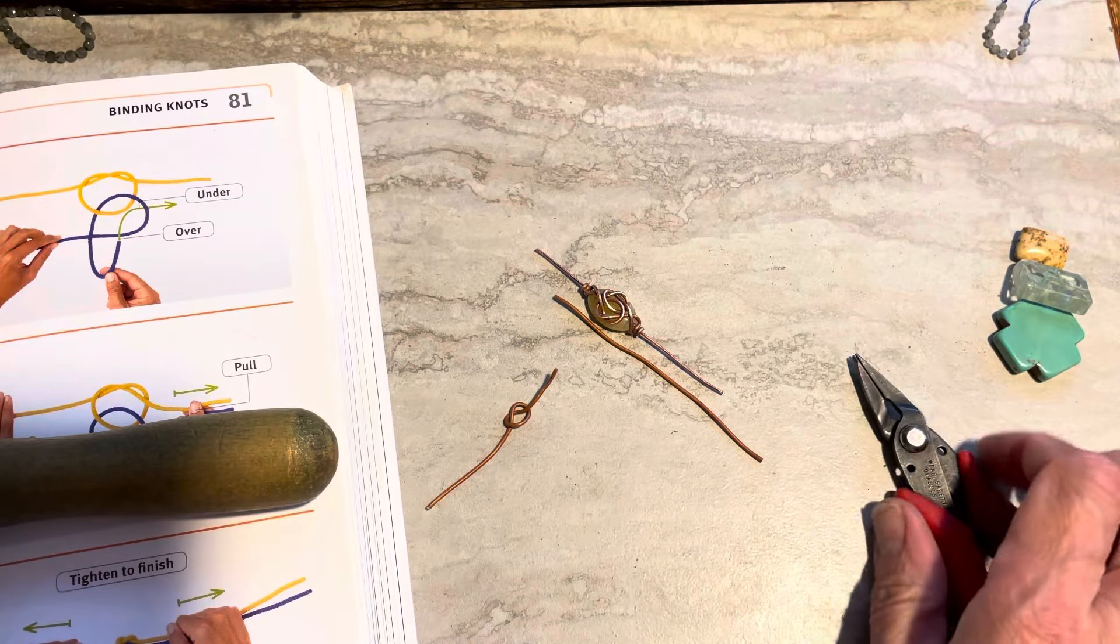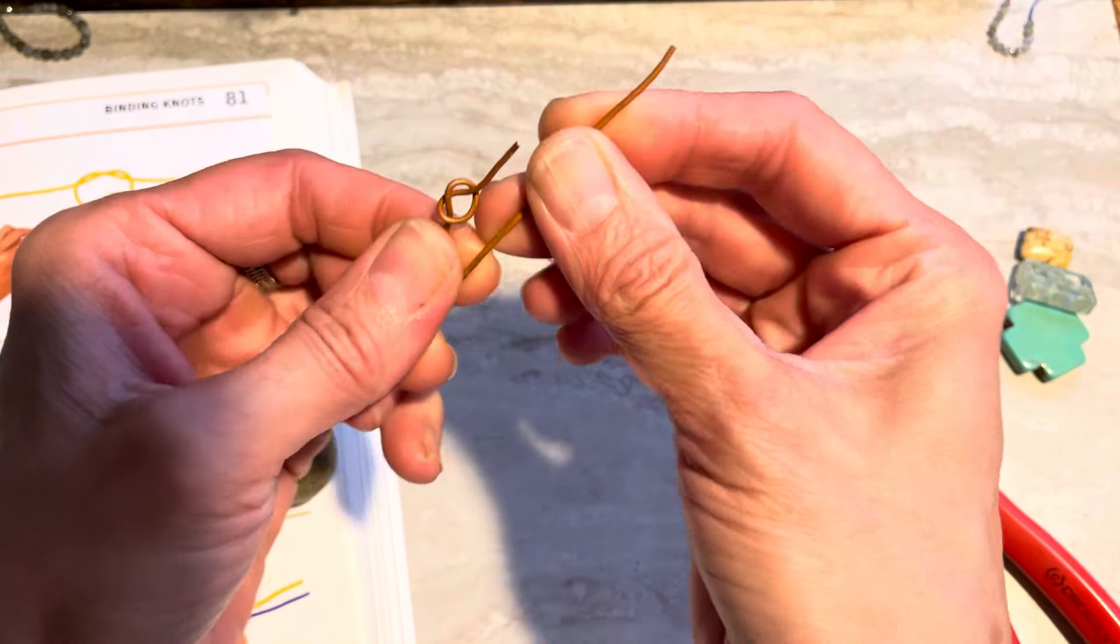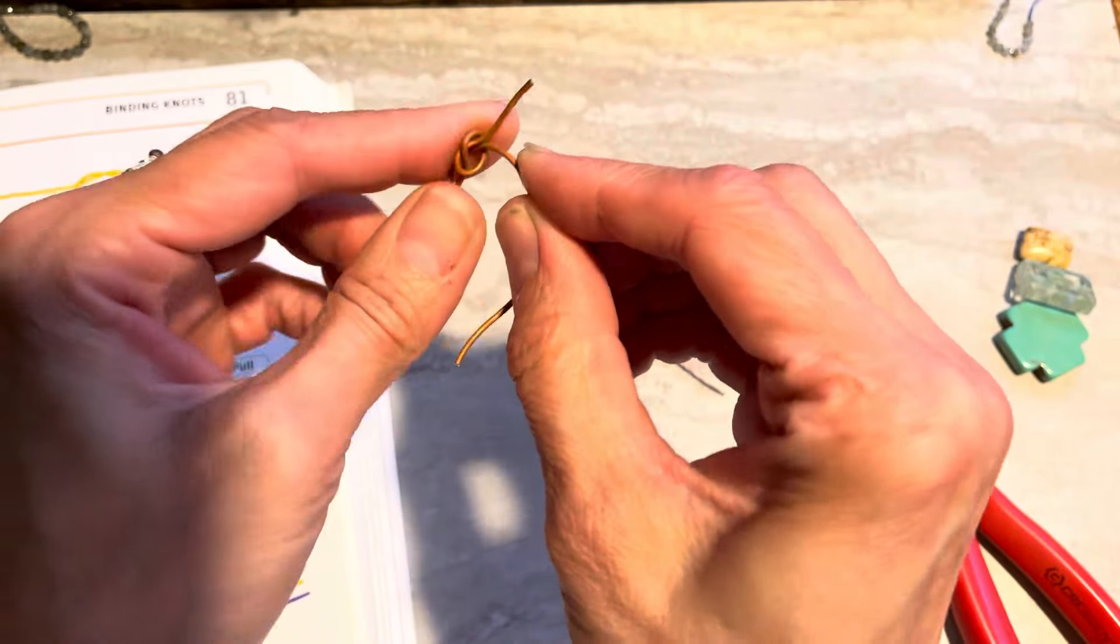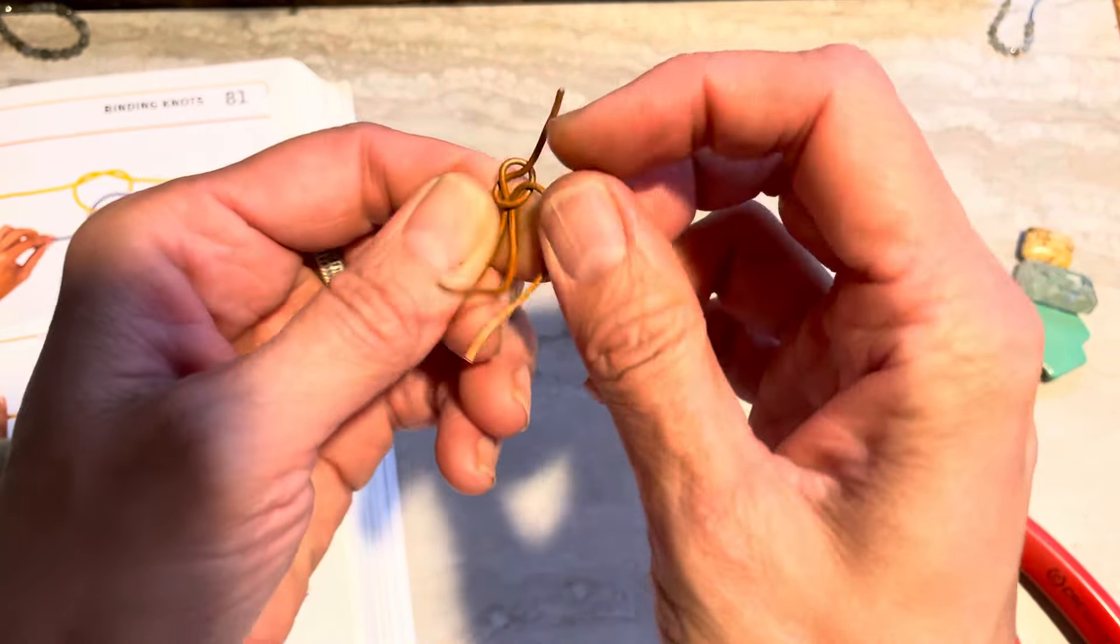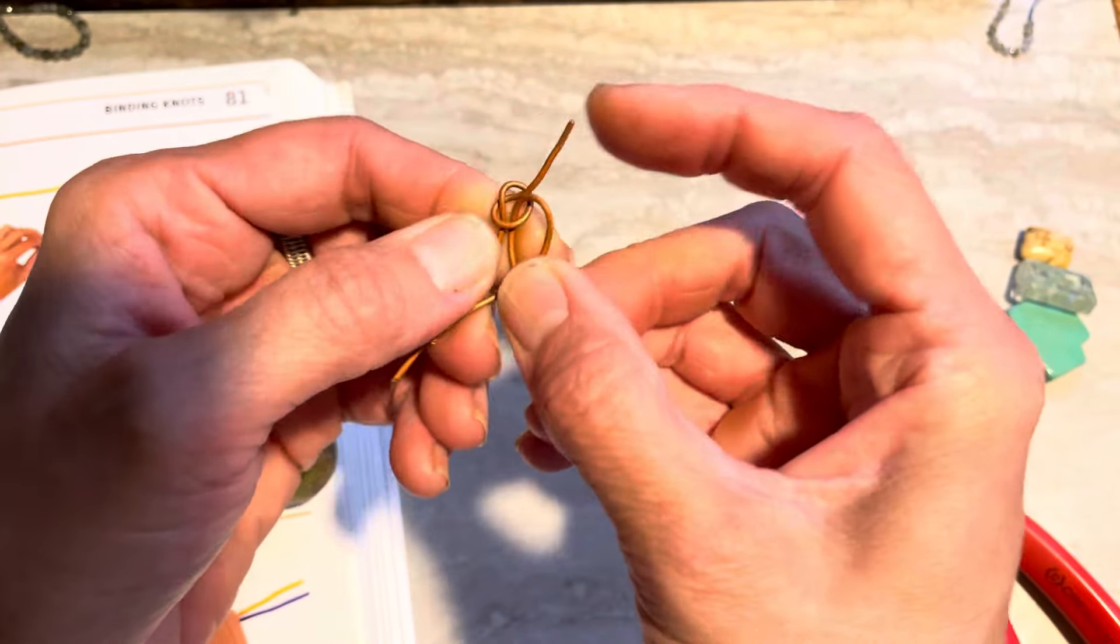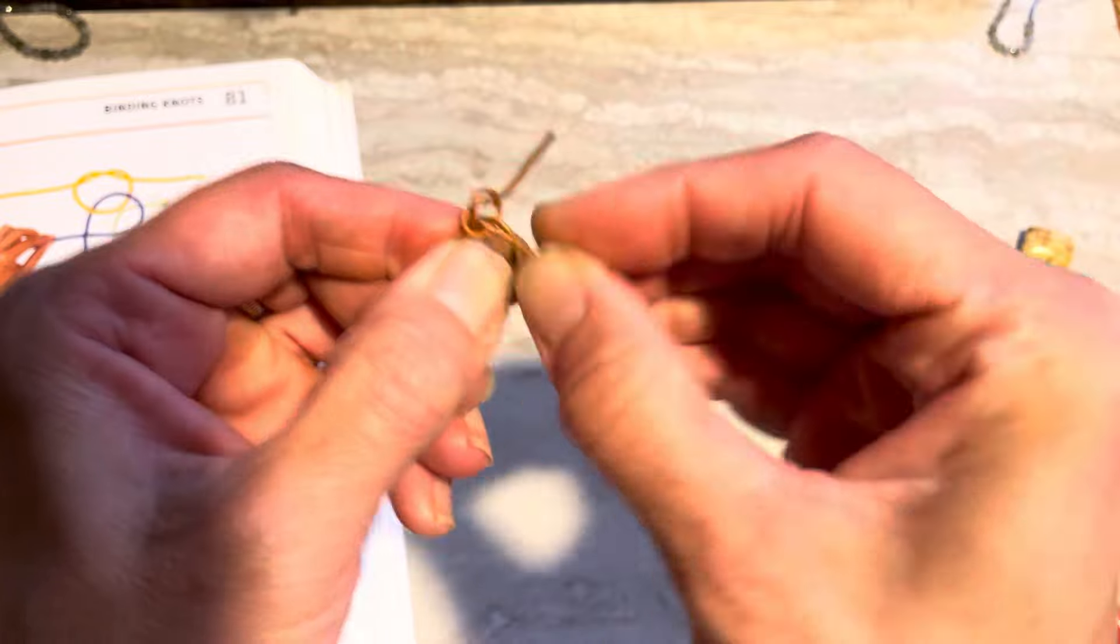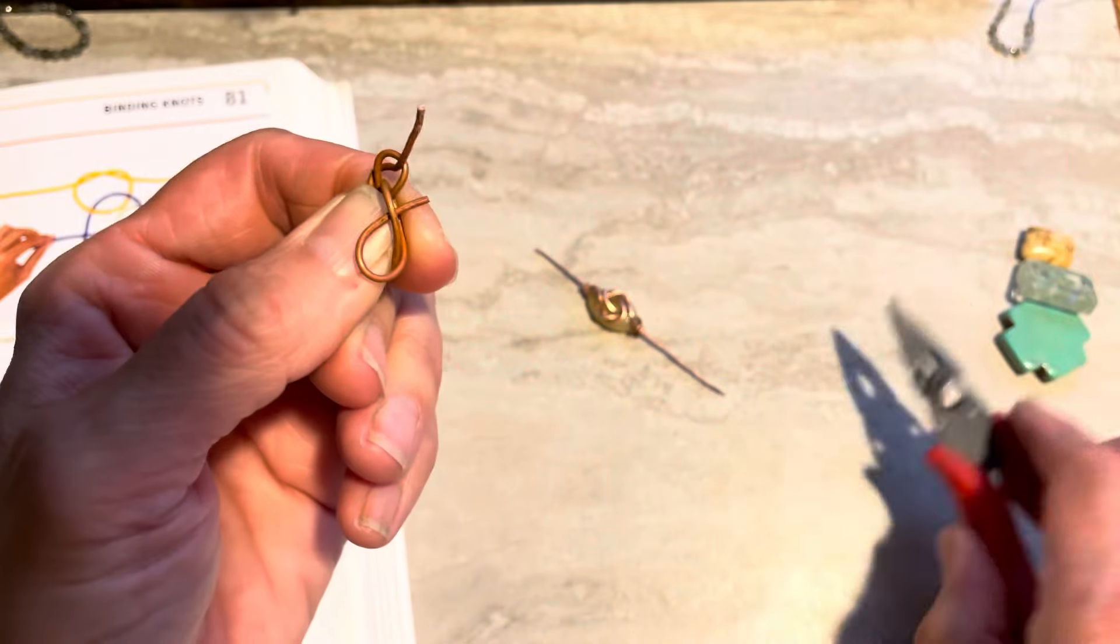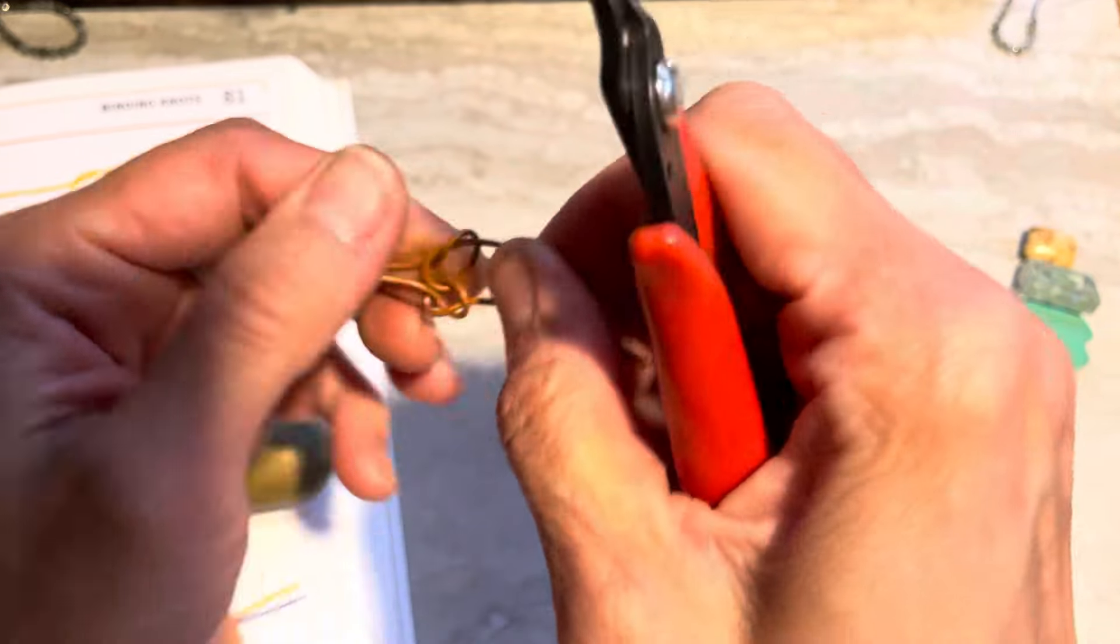Now we will do another one. So we have to set this wire straight, curve it, go inside. Then it has to go under our wire and then inside this loop and out. And we have another pretzel.